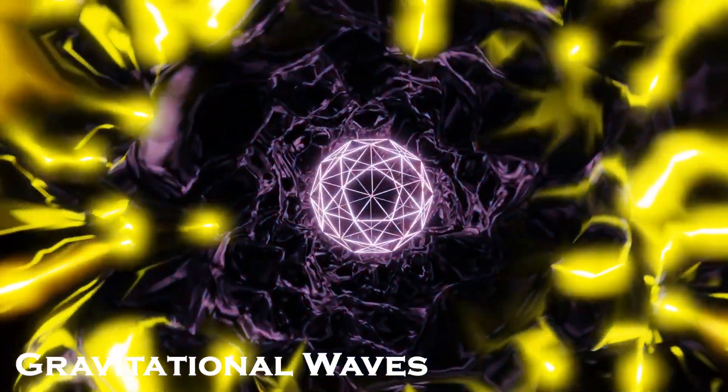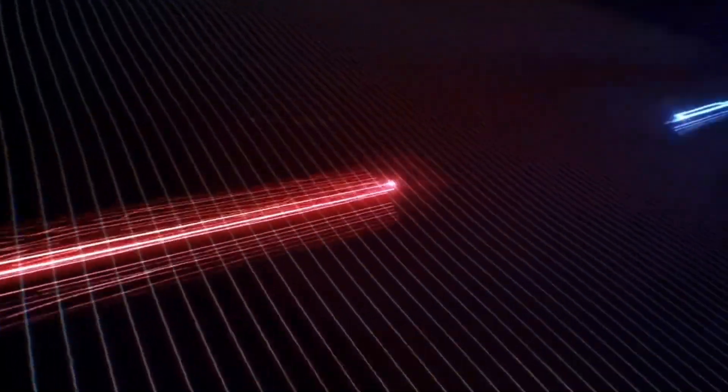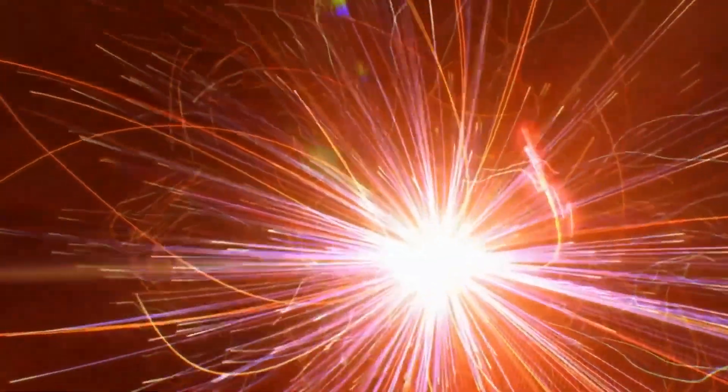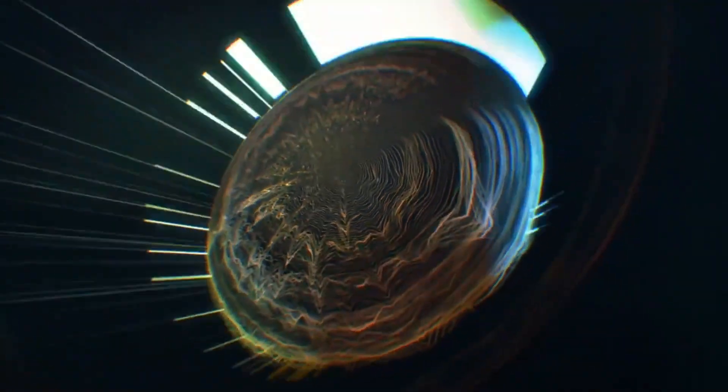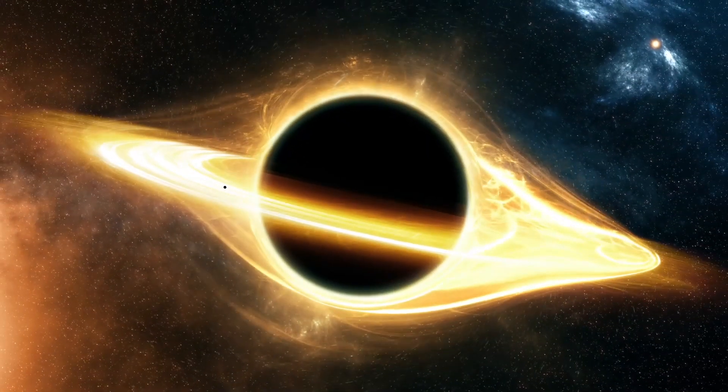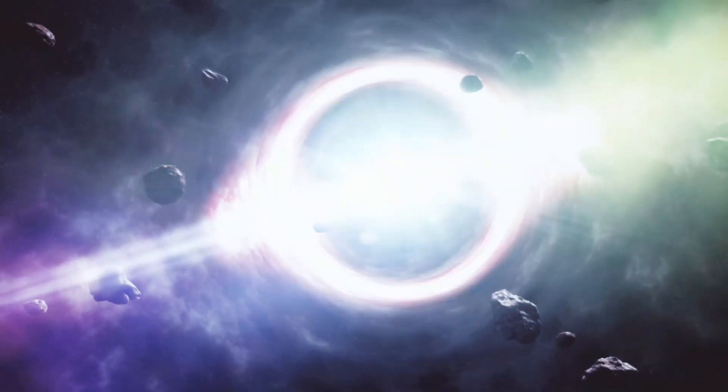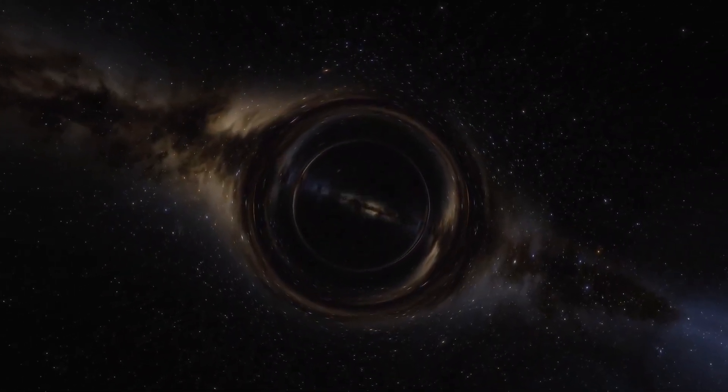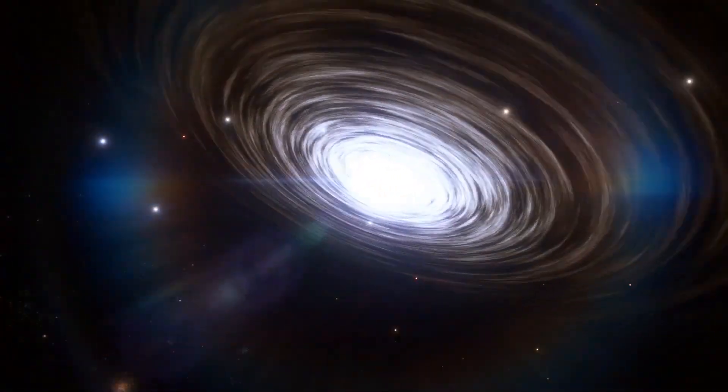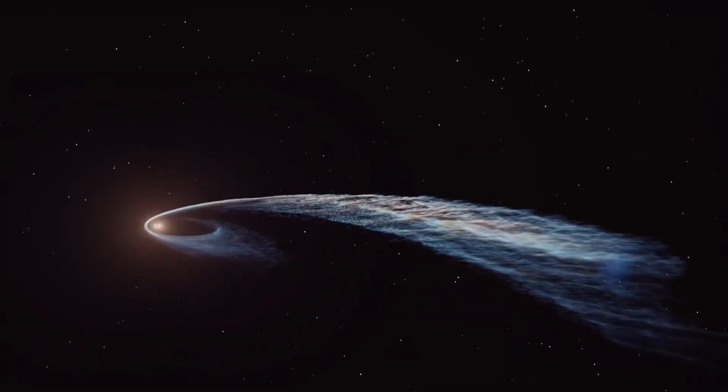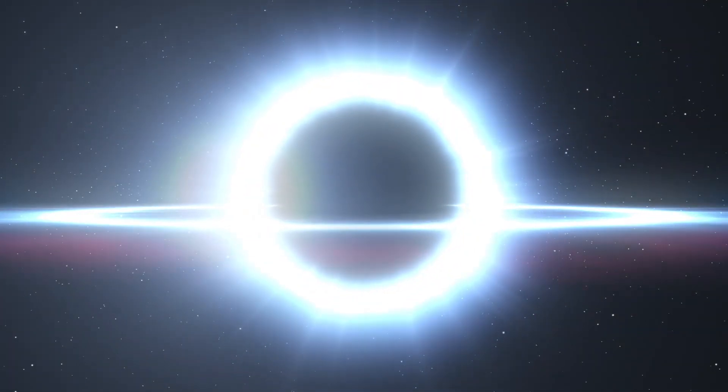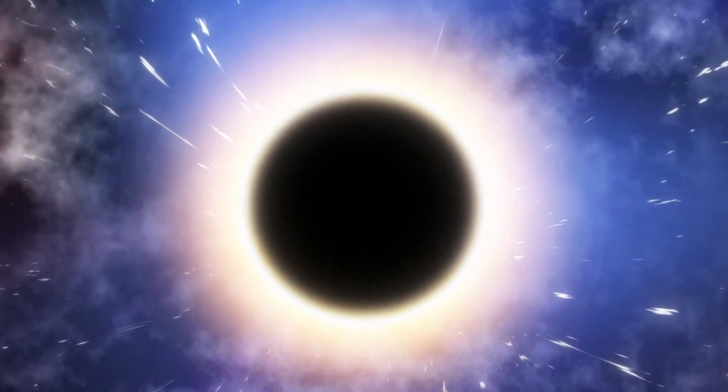Gravitational Waves. While not directly related to GRB 080319B, it is worth mentioning that the merger of two neutron stars or a neutron star with a black hole, which can produce a GRB, also generates gravitational waves. These ripples in the fabric of space-time were first directly detected in 2015, opening a new window for studying the universe. Gravitational wave observatories, such as LIGO and Virgo, can detect the minute distortions caused by these waves. The simultaneous detection of gravitational waves and electromagnetic radiation from a GRB can provide invaluable insights into the physics of extreme cosmic events, such as the merging of compact objects.